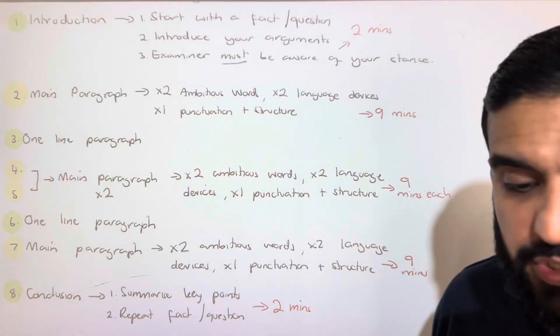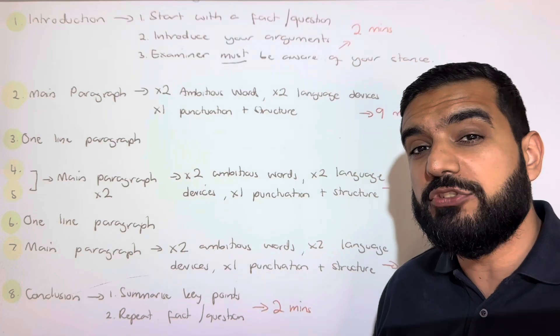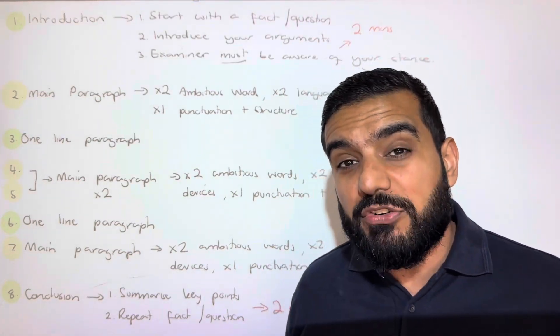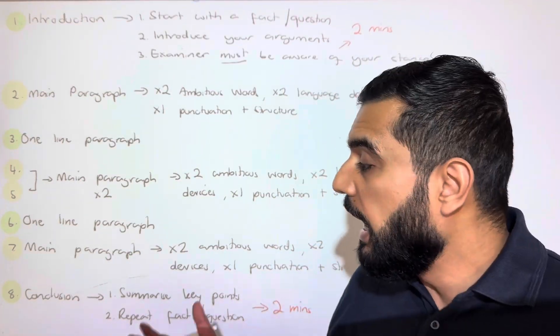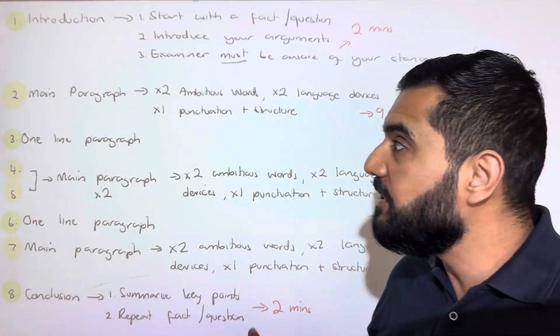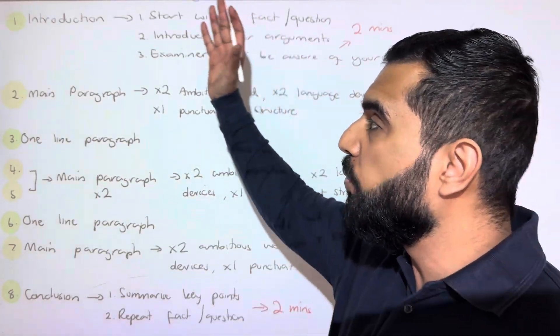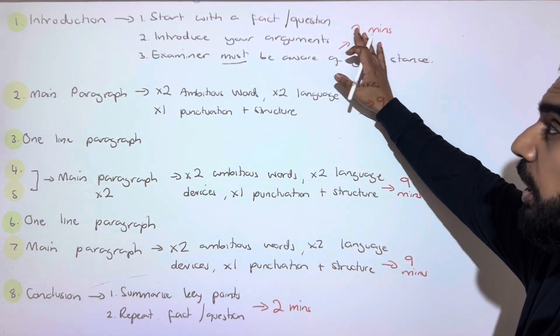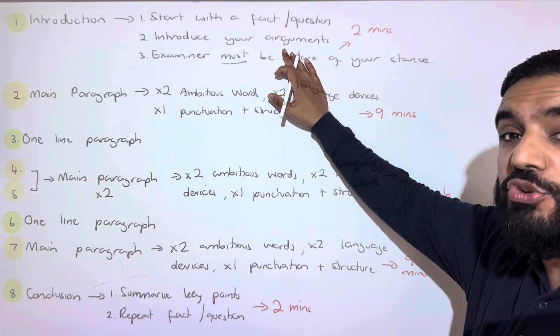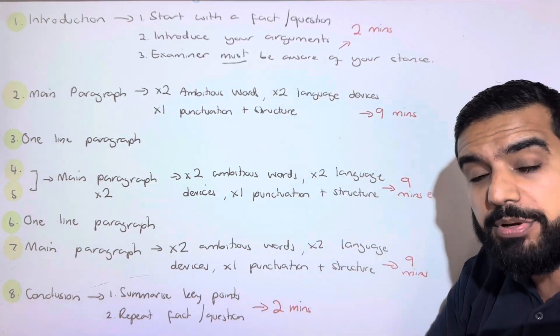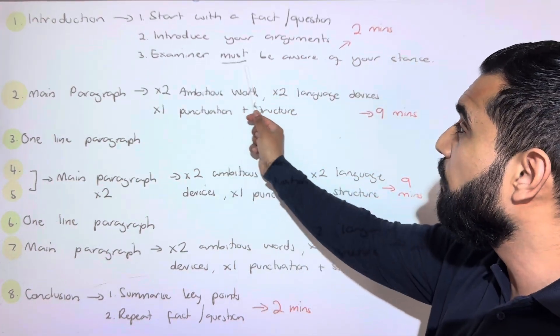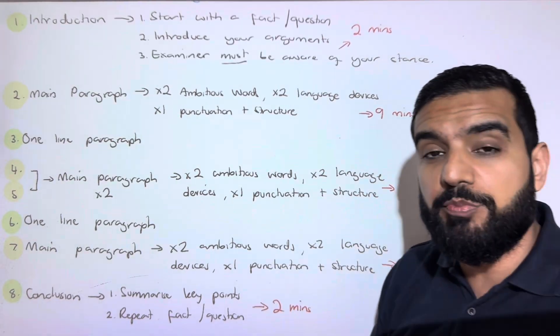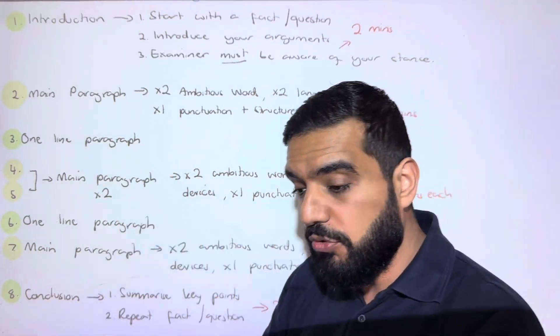You're aiming in total to do eight paragraphs. Now, before you fall off your chair and say, "Sir, eight paragraphs is too much," hear me out. We begin with the intro. Our intro is two minutes. In our intro, we start with a fact or a question. We introduce our argument, and the purpose of the intro is that by the end, the examiner should be aware: are you arguing for or are you arguing against? What is your stance for this question?